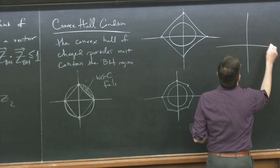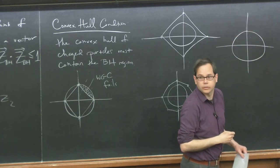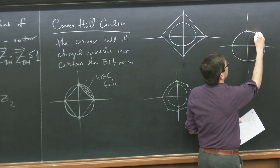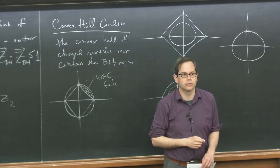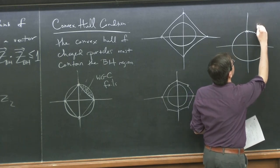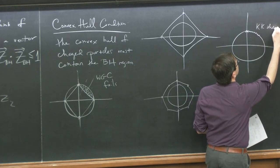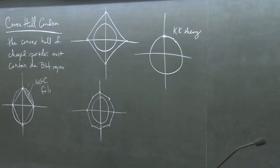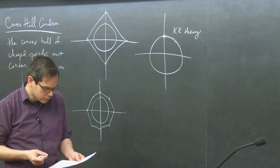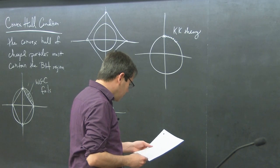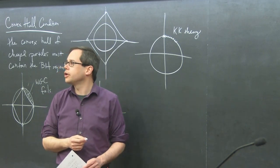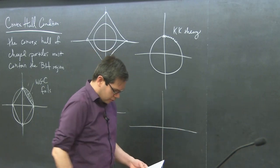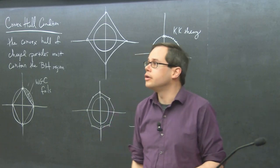We saw yesterday that in Kaluza-Klein theory, there are examples that obey much stronger properties — charged particles living on the boundary of this region in every direction. The reason is that in this case the extremality bound coincides with the BPS bound. If you study theories that have scalars, you'll find that the black hole extremality bound can sometimes take a different form.